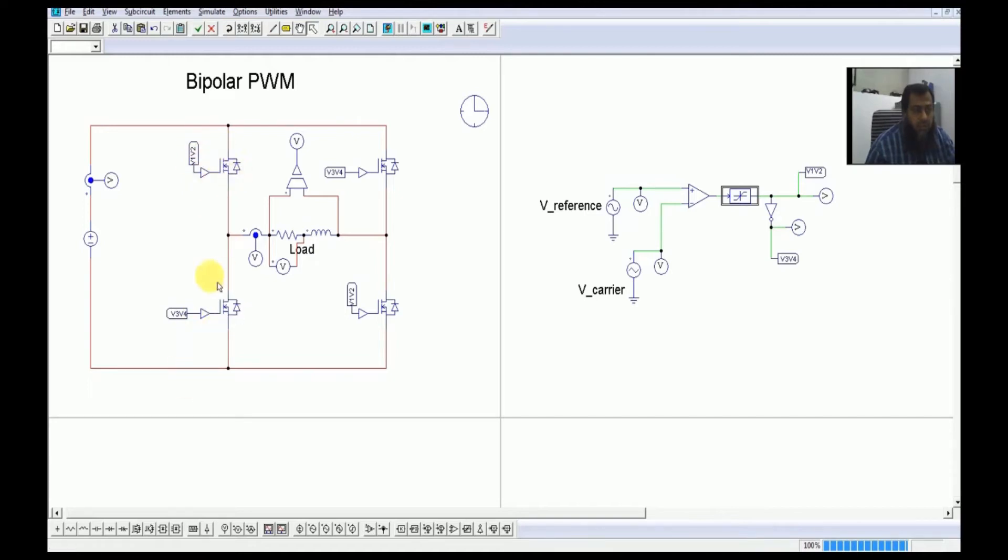We need to have a NOT operation here so that when this switch is turning on, then this switch should be turned off. We have placed a NOT gate here so when we are turning on this diagonal pair, then this diagonal pair passes through this NOT gate and hence these two switches remain off.